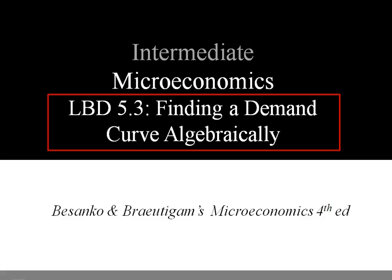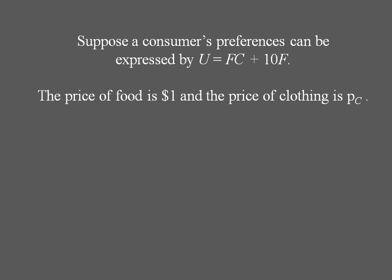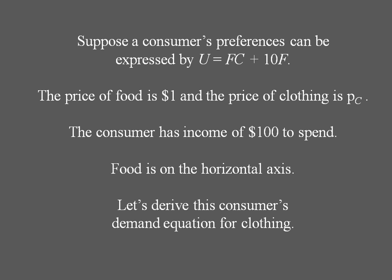Here's another example of finding a demand curve algebraically. A consumer's preferences are utility equals F times C plus 10F. The price of food is $1 and the price of clothing is PC. This consumer has income of $100 to spend, food is on the horizontal axis, and let's derive this consumer's demand equation for clothing.